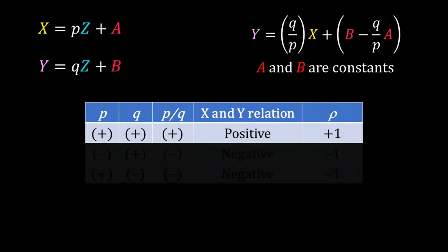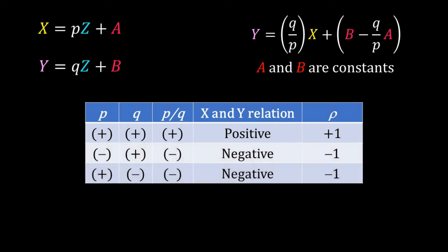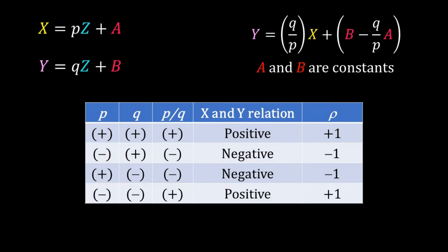When either p or q is negative, x and y have a negative linear association and rho is −1. When both p and q are negative, x and y again have a positive linear association, so rho is +1. The sign of rho depends on the signs of p and q.